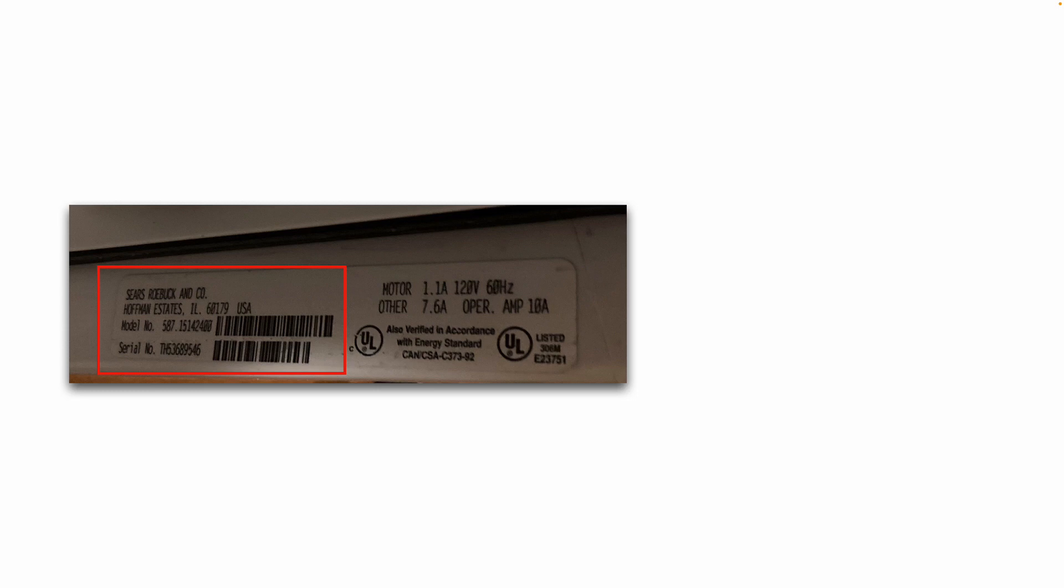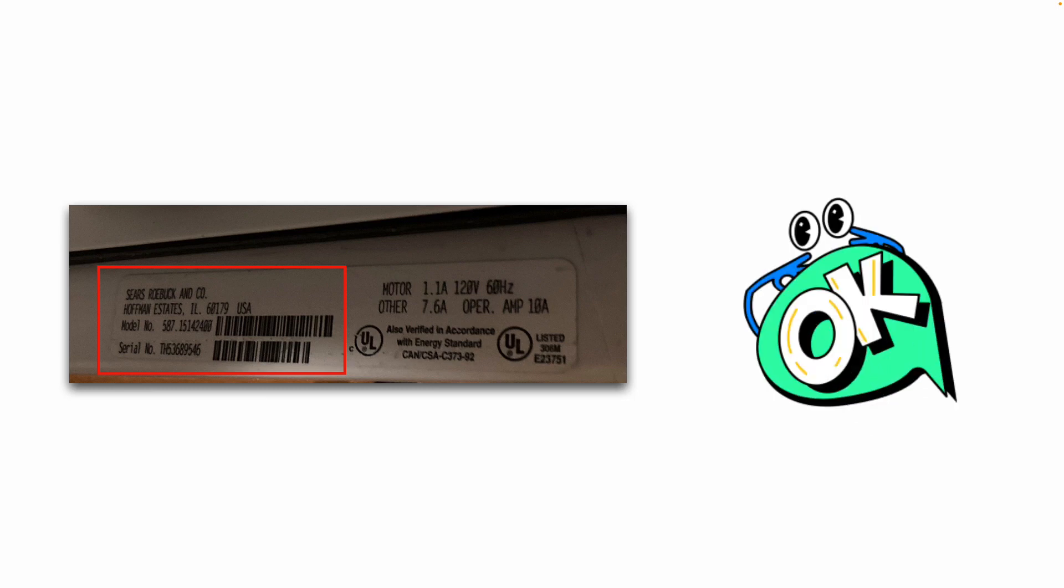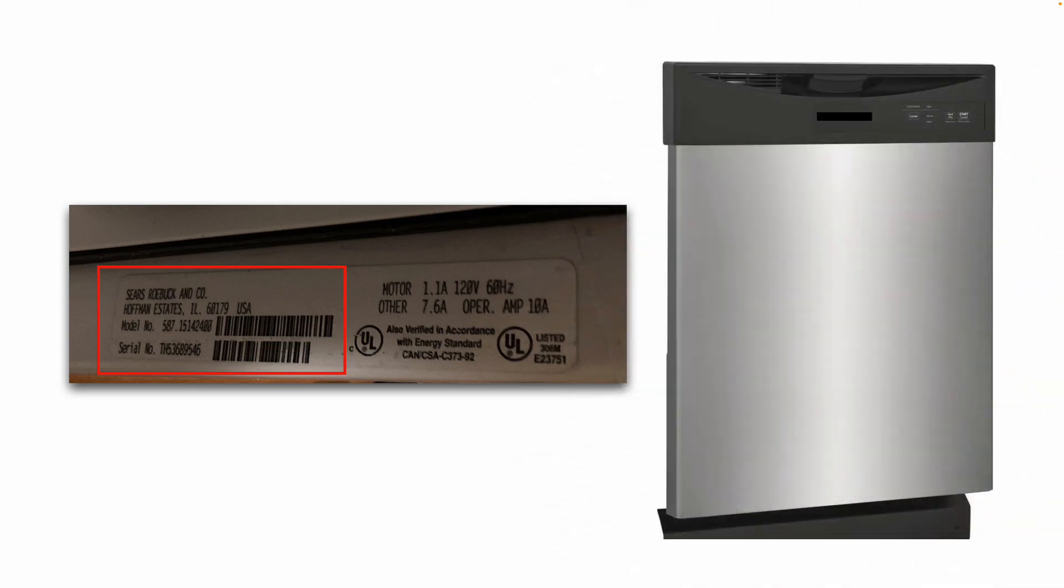You can see this is model number 587.15142400. When you need to buy replacement parts and do a Google search online for parts, you're going to want your model number and oftentimes your serial number of your dishwasher. There's different websites you can use to buy parts from. So again, this is the model that I have.